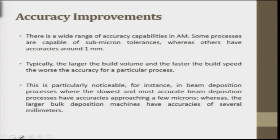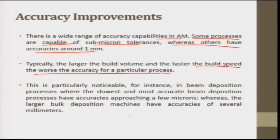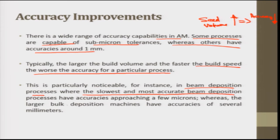Next is accuracy improvements. There is a wide range of accuracy capabilities in additive manufacturing — some processes are capable of sub-micron tolerances whereas others have accuracies around 1 mm. Typically, the larger the build volume and the faster the build speed, the worse the accuracy. This is particularly noticeable in beam deposition processes, where the slowest and most accurate have accuracies approaching a few microns, while large bulk deposition machines have accuracy of several millimeters.